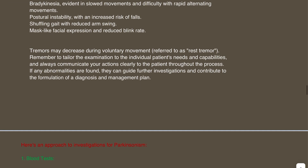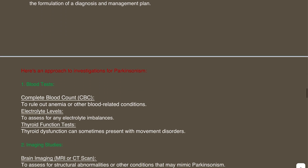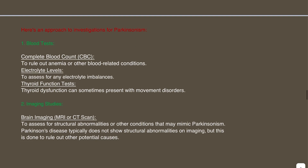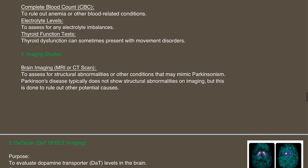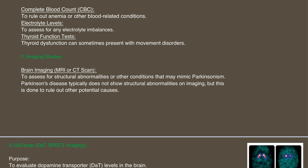Once you have done your examination, you may need to present the case. The examiner may ask about your approach to investigations due to time constraints. Try to be systematic. We're going to do blood tests: CBC to rule out any anaemia or blood-related conditions, electrolytes, and thyroid function tests. For imaging studies, brain imaging with MRI or CT scan to assess for any structural abnormalities or other conditions that may mimic Parkinsonism.